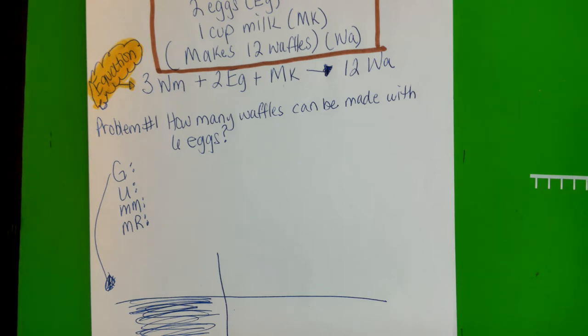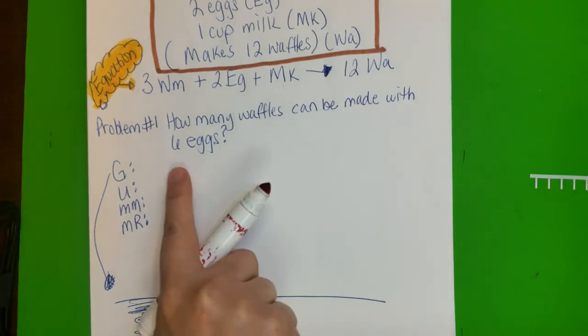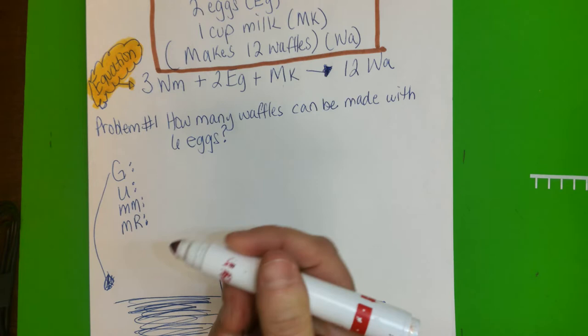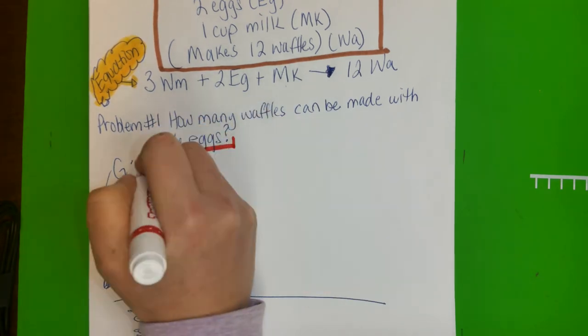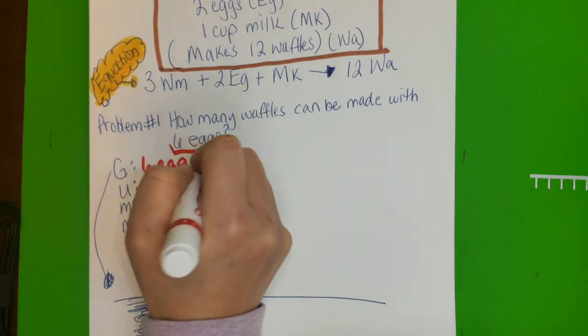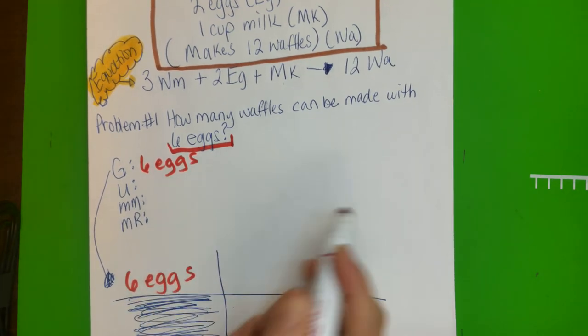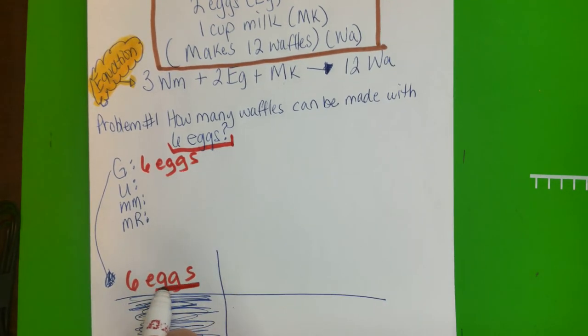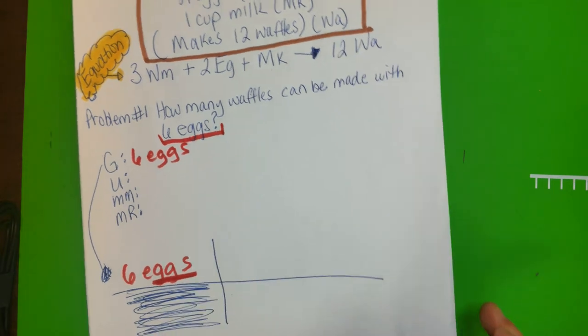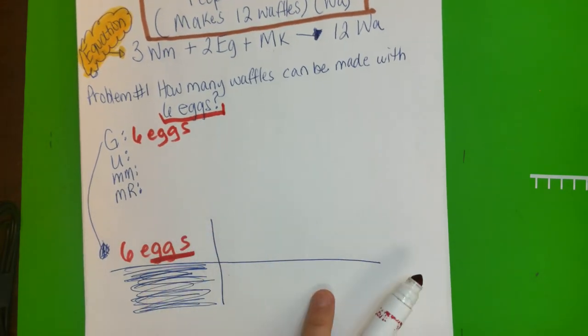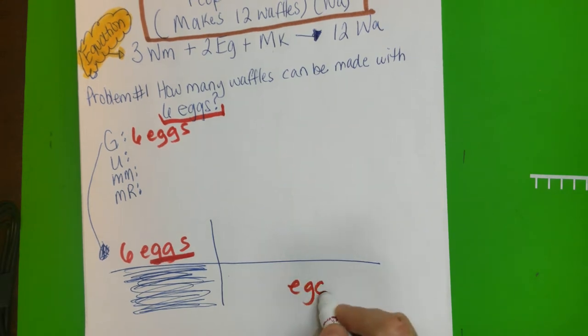Okay, so now let's get started with the problem. Problem number one shows how many waffles can be made with six eggs. So six eggs is obviously gonna be our given, so six eggs. So we're gonna put six eggs. Okay, and you know this is eggs right, so this bottom part should be eggs. Okay, it should be eggs, but we don't have conversions here yet, but let's just keep that in mind.